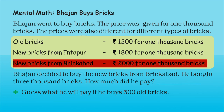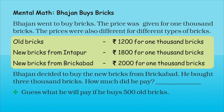We know that the cost of one thousand bricks from Brikabad is rupees 2,000. So if we want to buy two thousand bricks we have to pay 2,000 + 2,000 = 4,000 rupees. Now Bhajan wants to buy three thousand bricks, so we have to add: 2,000 + 2,000 + 2,000 = 6,000 rupees. Therefore he has to pay six thousand rupees to buy three thousand bricks from Brikabad.